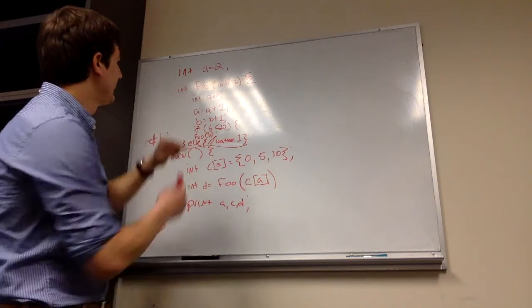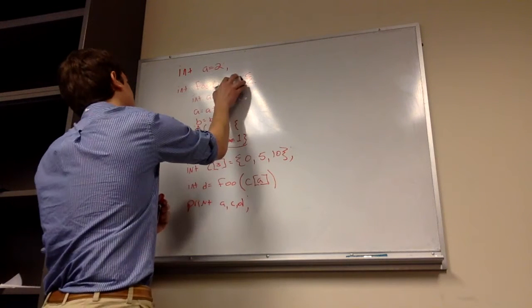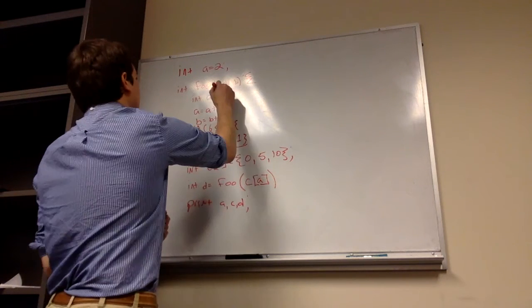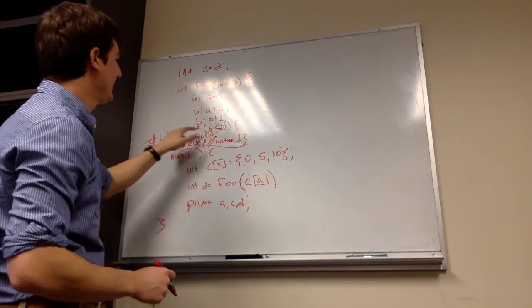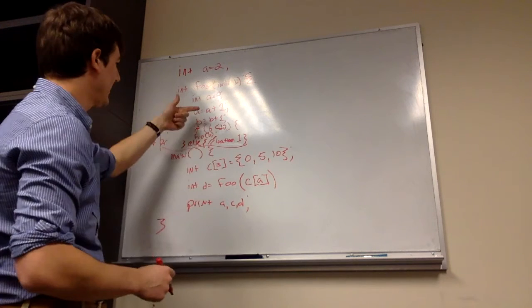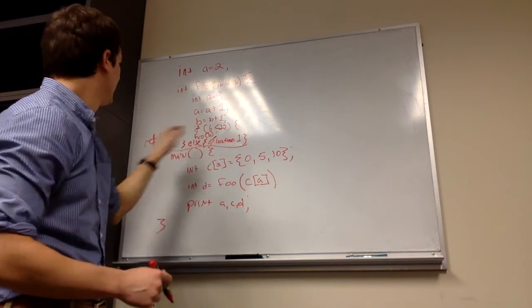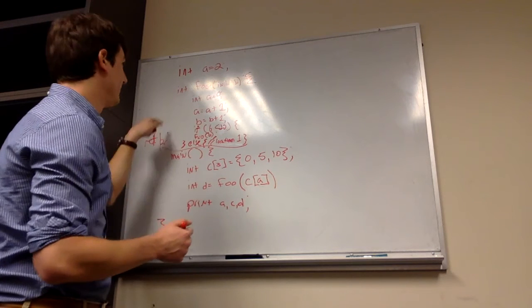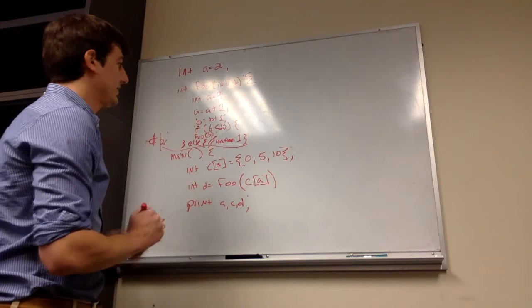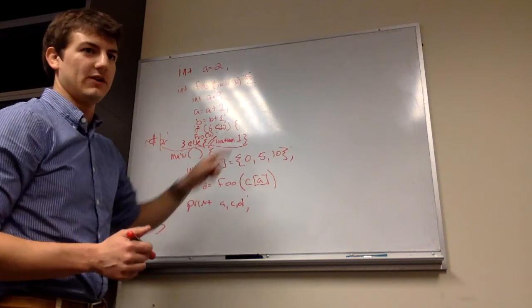It calls foo, foo does a bunch of stuff, then we're printing out A, C, and D. Inside foo, foo sets A to be zero, A is going to be A plus one, B is equal to B plus one. If B is less than 20, then we call foo again. Otherwise, we go to location one and we're going to return B from foo. So the question is how to draw the stack at location one.